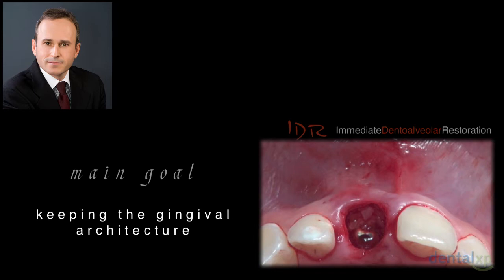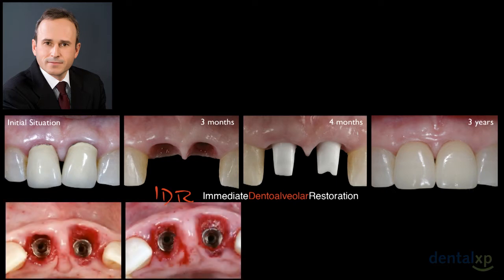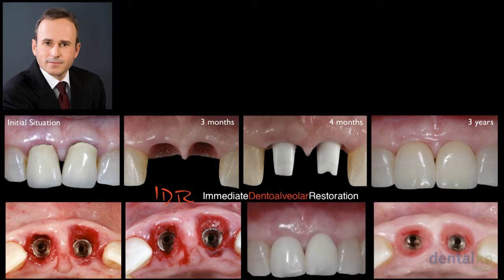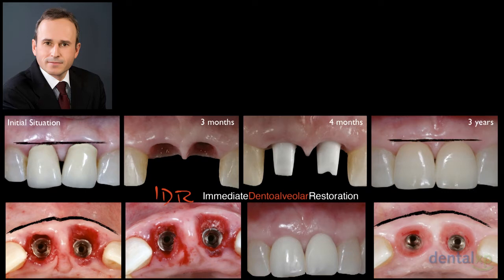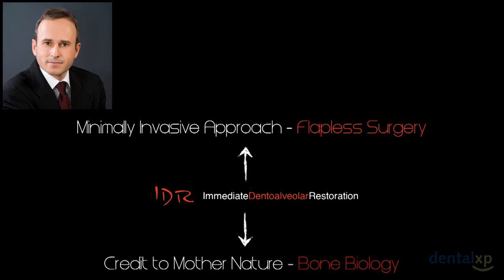Let's look at this case: the initial situation, after three months, four months, and after three years. Both teeth presented total absence of buccal cortical wall. We reconstructed the defects, inserted the provisional crown, and after three months we had maintenance of gingival architecture. Comparing the initial situation and three years later, we can observe maintenance of the gingival margin level. This is a minimally invasive, flapless approach — all credits go to nature, because we use bone biology and autogenous bone graft transplanted to the receptor site.